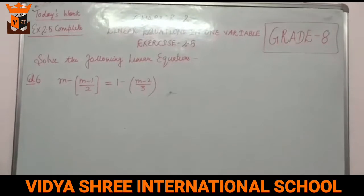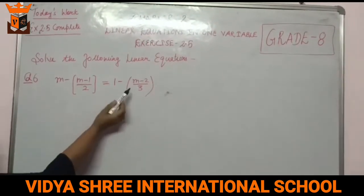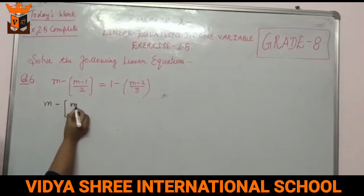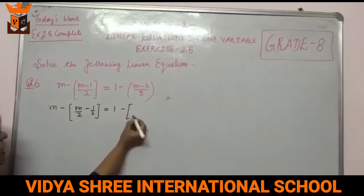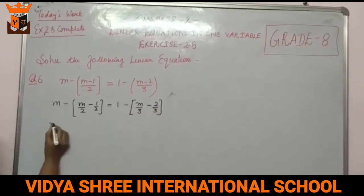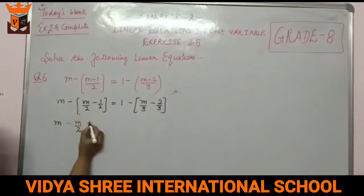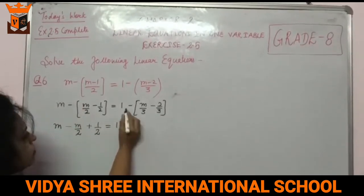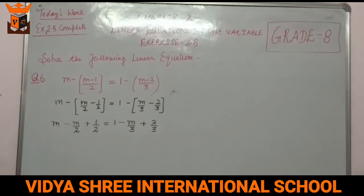Now this is question number 6: M minus (M minus 1)/2 equals 1 minus (M minus 2)/3. First we separate the denominators. Left side: M/2 minus 1/2. Right side: M/3 minus 2/3. When the minus sign goes inside the bracket, minus M/2 plus 1/2 and minus M/3 plus 2/3.